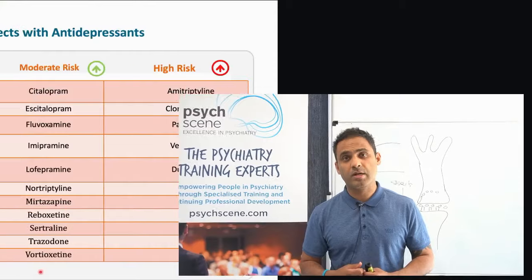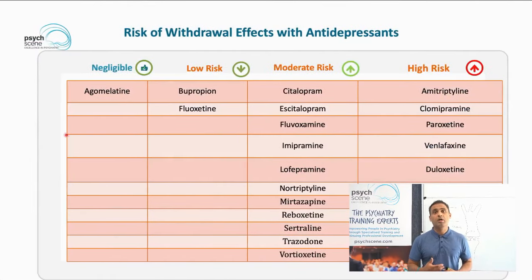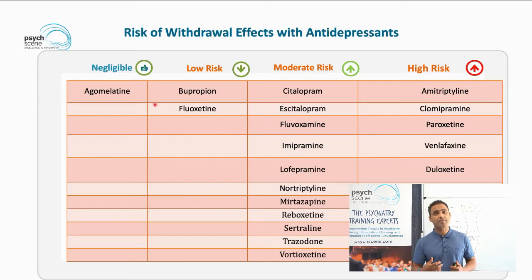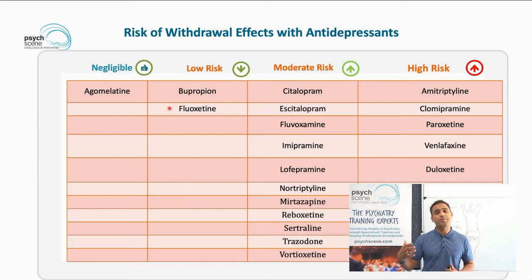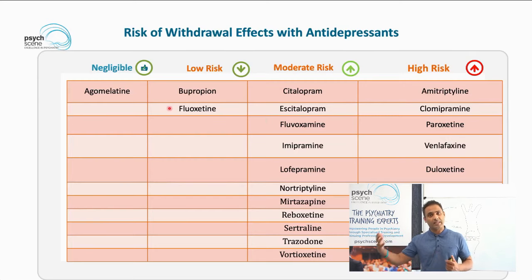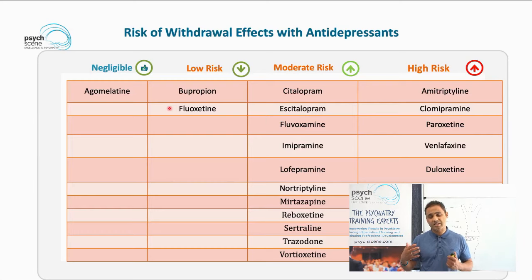Let's rank antidepressants by their propensity for withdrawal or discontinuation syndrome. Agomelatine has negligible withdrawal risk. Lower-risk antidepressants include bupropion and fluoxetine — fluoxetine mainly because it has a long half-life. Fluoxetine's metabolite norfluoxetine has a half-life of five to seven days, giving a washout period of approximately 35 days. Fluoxetine therefore tends to have lower severity and lower incidence of withdrawal syndrome, though it's important to recognize that withdrawal with fluoxetine can occur much later than with other antidepressants.